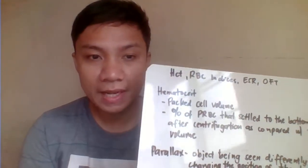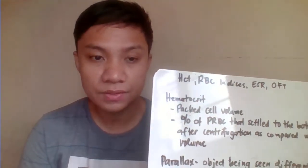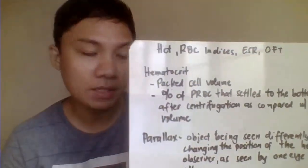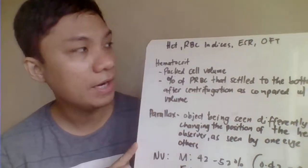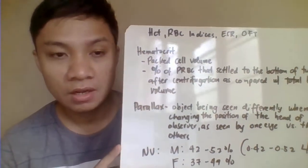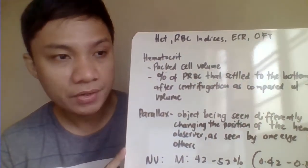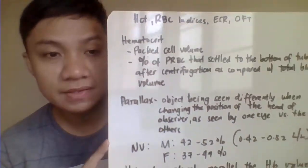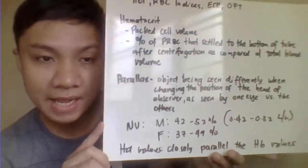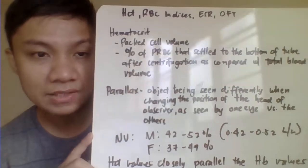Today we're going to discuss other parameters that we perform in the hematology laboratory. We have hematocrit determination, blood indices, erythrocyte sedimentation rate, and the osmotic fragility test.